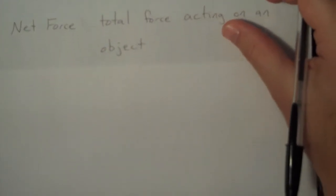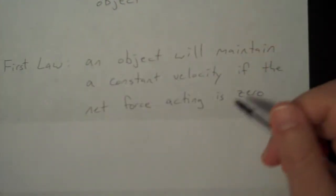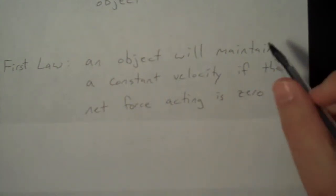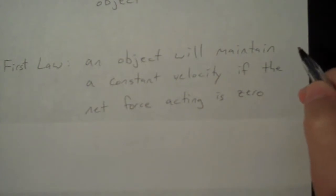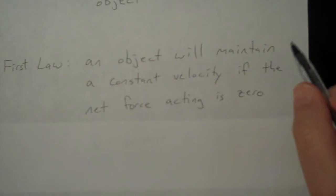Now that we have an understanding of what force is, let's look at Newton's first law of motion. The first law states that an object will maintain a constant velocity if the net force acting is zero. What does this mean? Well, you can have multiple forces acting on an object, but if they add up to zero, they have no effect on the motion. So you're going to maintain a constant velocity.